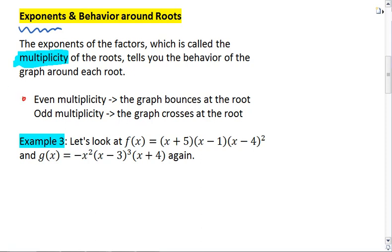If we have an even multiplicity, the graph bounces at the root. If we have an odd multiplicity, the graph crosses at the root.